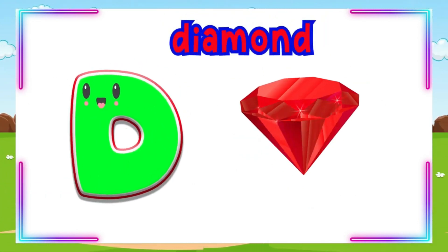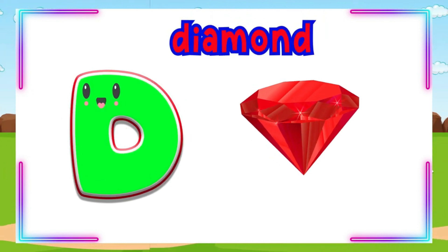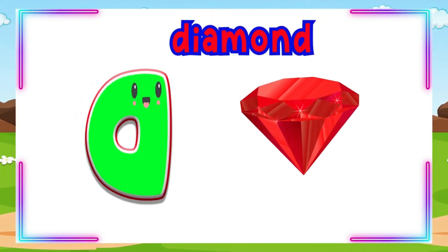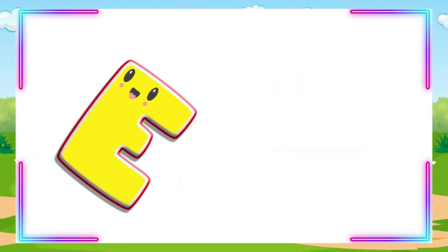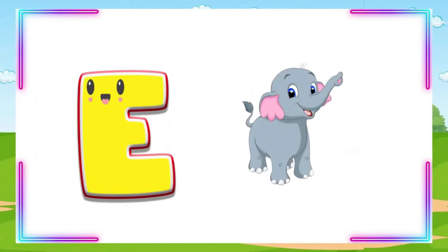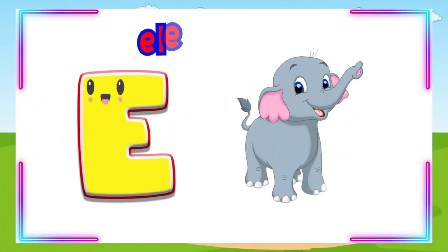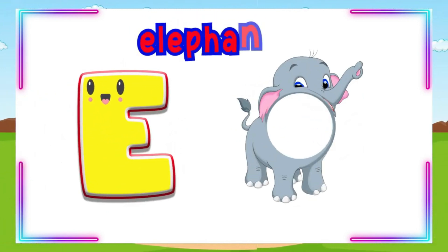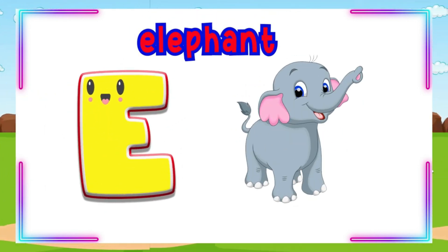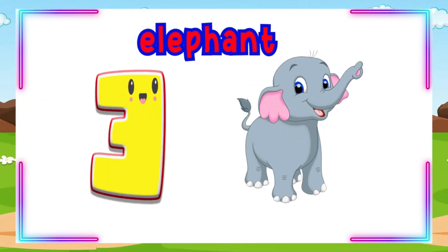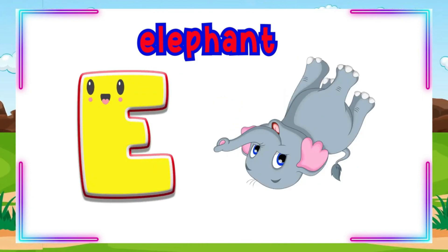D is for Diamond. D-D-Diamond, D-D-Diamond, D-Diamond. E is for Elephant. E-E-Elephant, E-E-Elephant, E-Elephant.